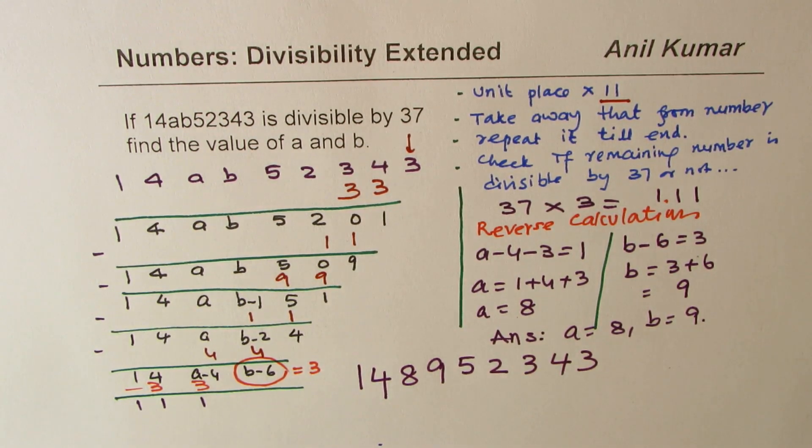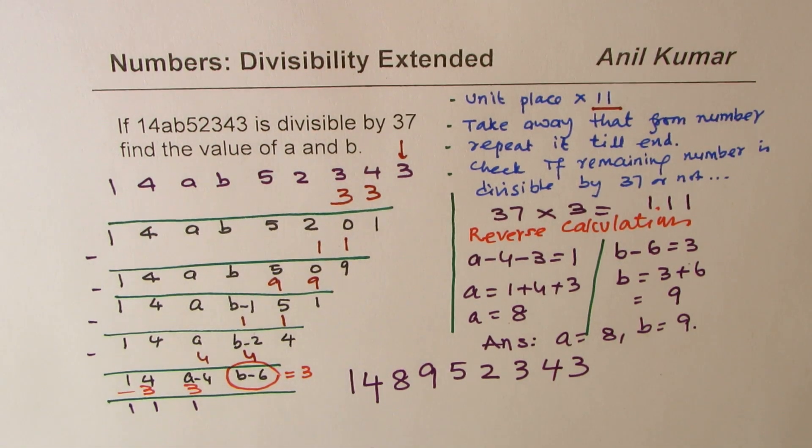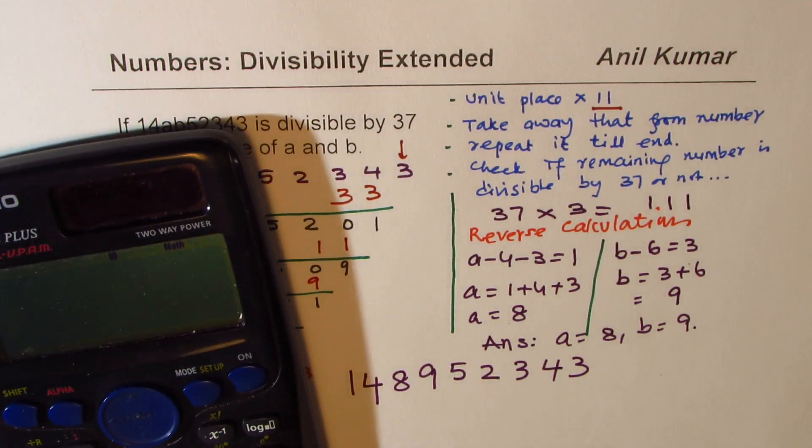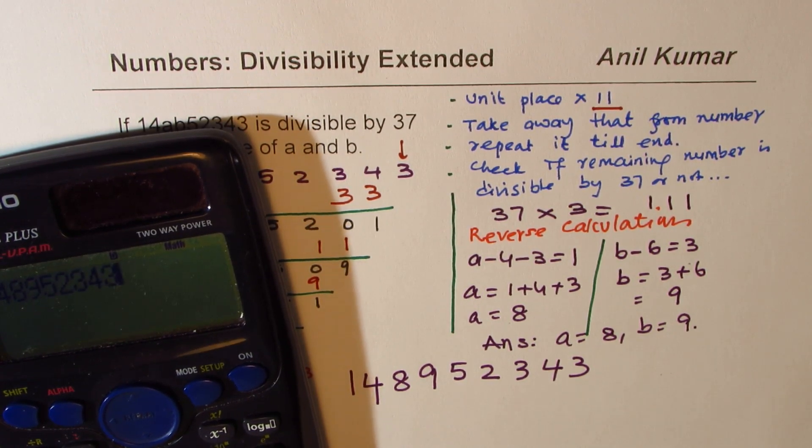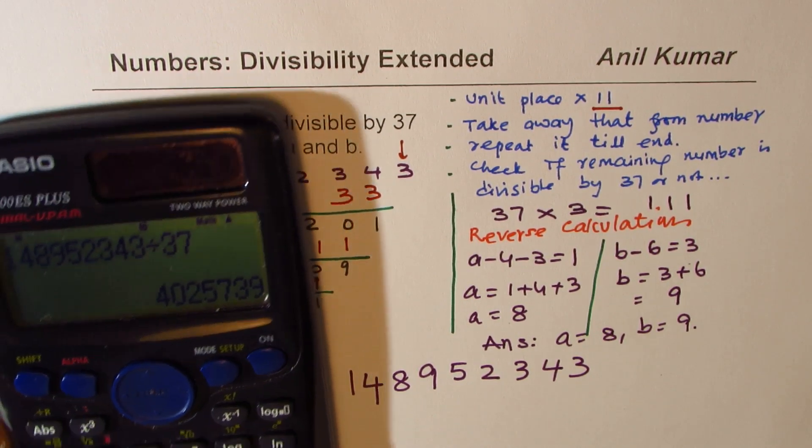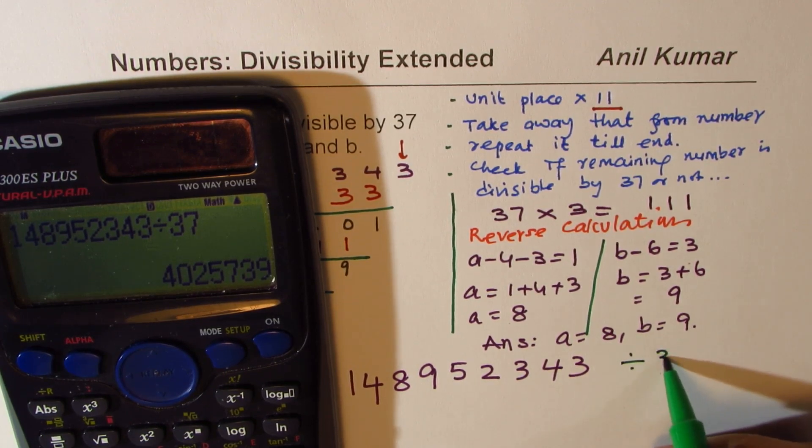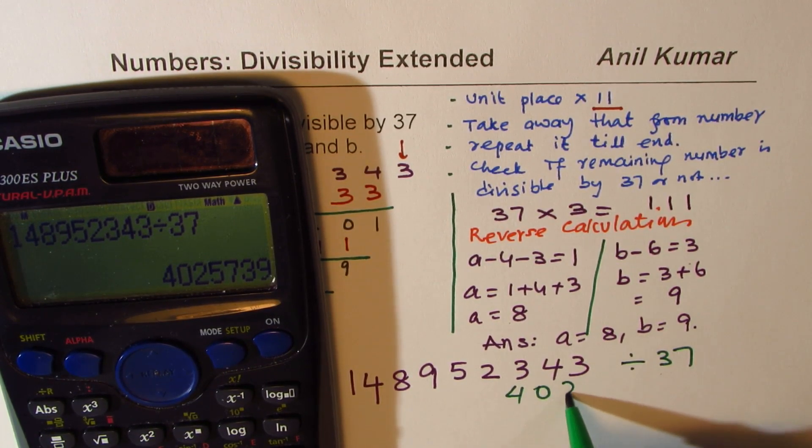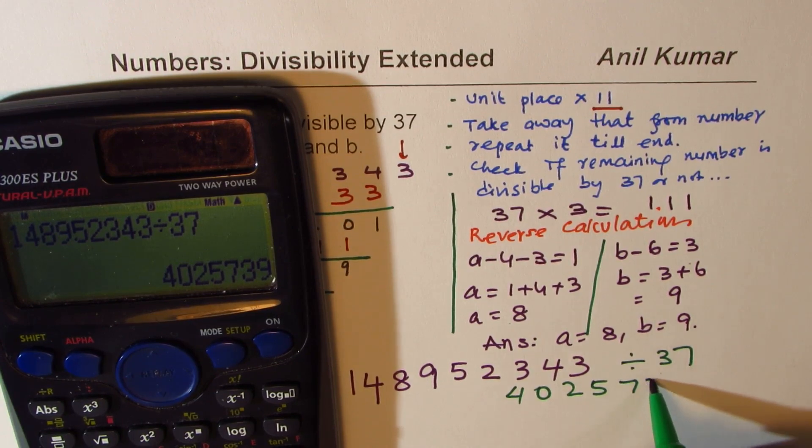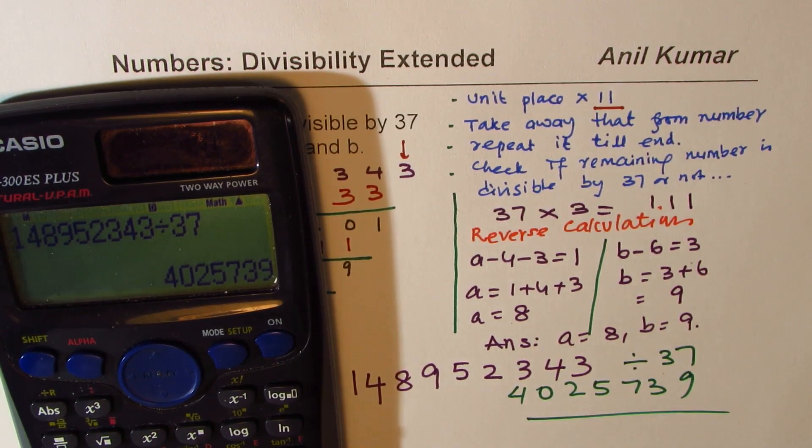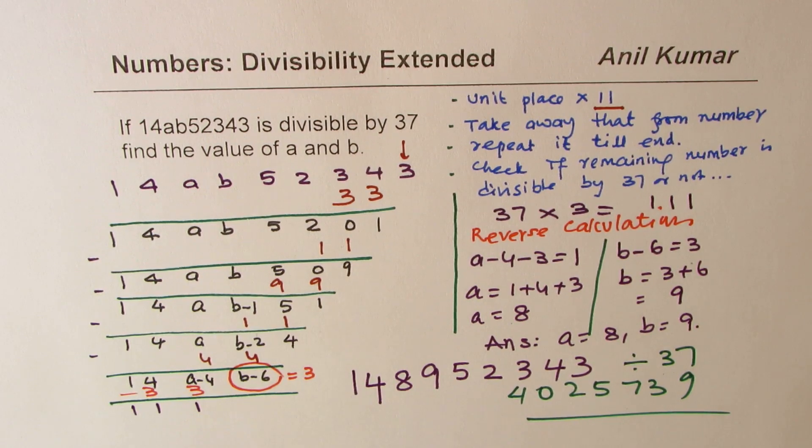Let us check if it is really divisible by 37. Finally, it is a good idea to check our result. So let's divide 148952343 by 37. What do we get? We do get a whole number. If I divide this by 37, I do get 4025739. So that means the answer is absolutely correct.